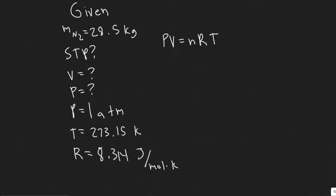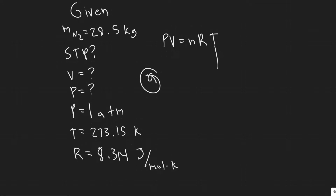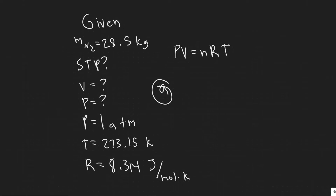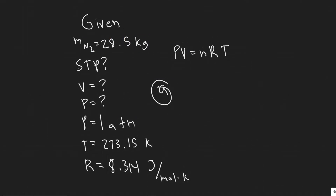For Part A, we want to find the volume V. We know the pressure is one ATM (standard pressure) and T is the standard temperature. R is just the constant. But we actually need N first — the number of moles — which we'll get from the given mass. We can convert 28.5 kilograms into moles of N2, and then solve for V.